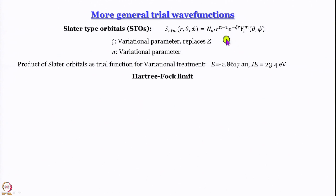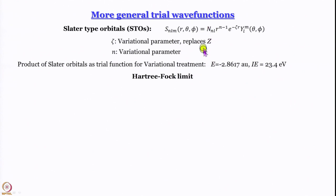We have something similar to hydrogen atom wave functions — a radial part multiplied by an angular part — but something is missing. What is missing is the Laguerre polynomial. We have an exponential decay in r, the r-to-the-power-something term, and the angular part, but the polynomial is absent. Not only is zeta a variational parameter, but n is also a variational parameter. When you use these as trial functions, you play around with n as well, and it does not need to be an integer — you might get values like 0.9, 0.8, and so on.